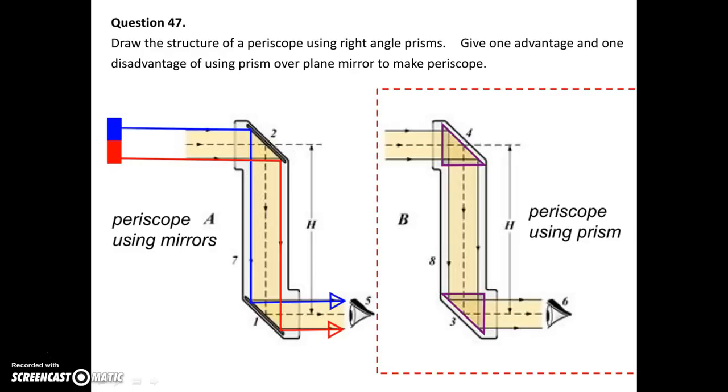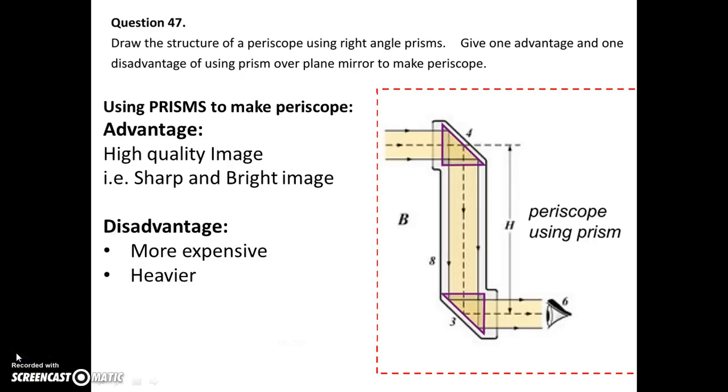This is question 47. It asks you to draw a periscope using right-angle prisms. There are two prisms here, I colored them in purple. You should put the prisms in this way. You may copy that diagram from your notes. And talking about advantages and disadvantages, using prism may produce high-quality image. That means the image is sharper and brighter.